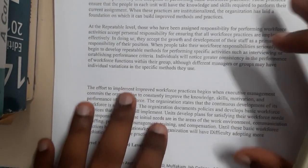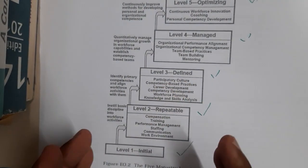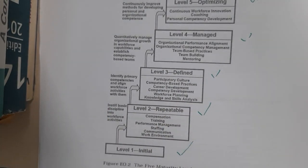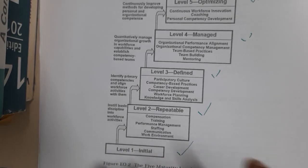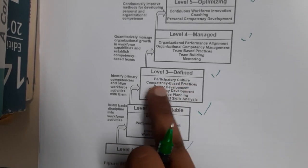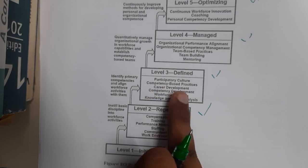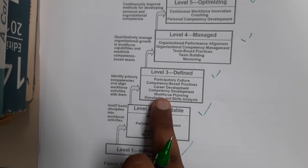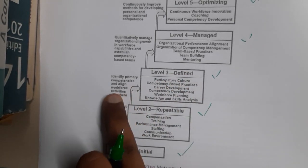The next level is Defined. Here you define things like organizational culture — such as what dress code employees should follow — and requirements around career development, competency development, workforce planning, and knowledge and skill analysis. At this level you align and perform structured development activities on the workforce.